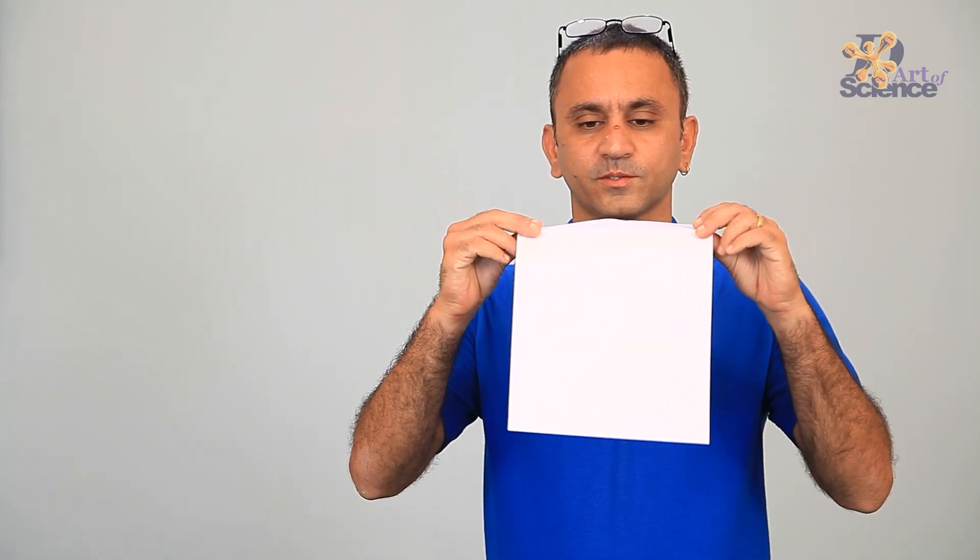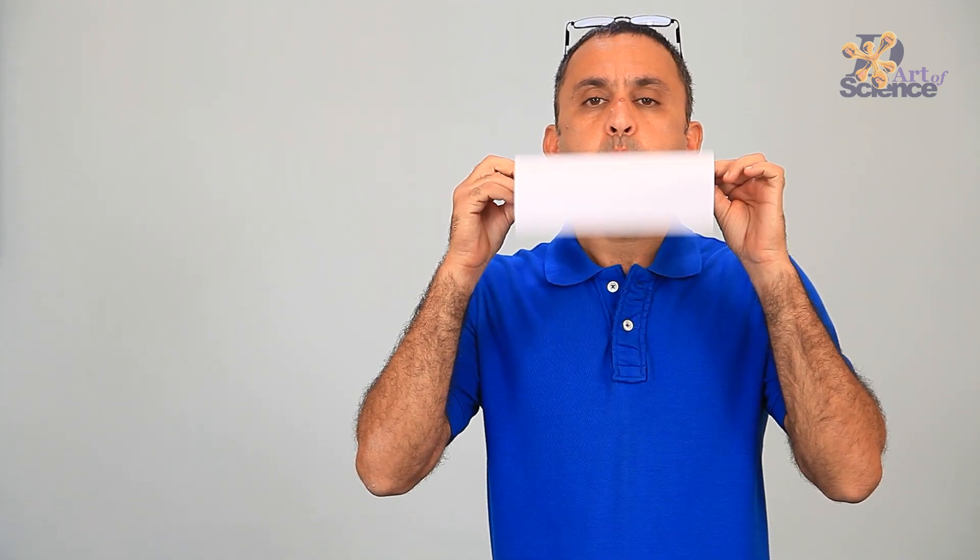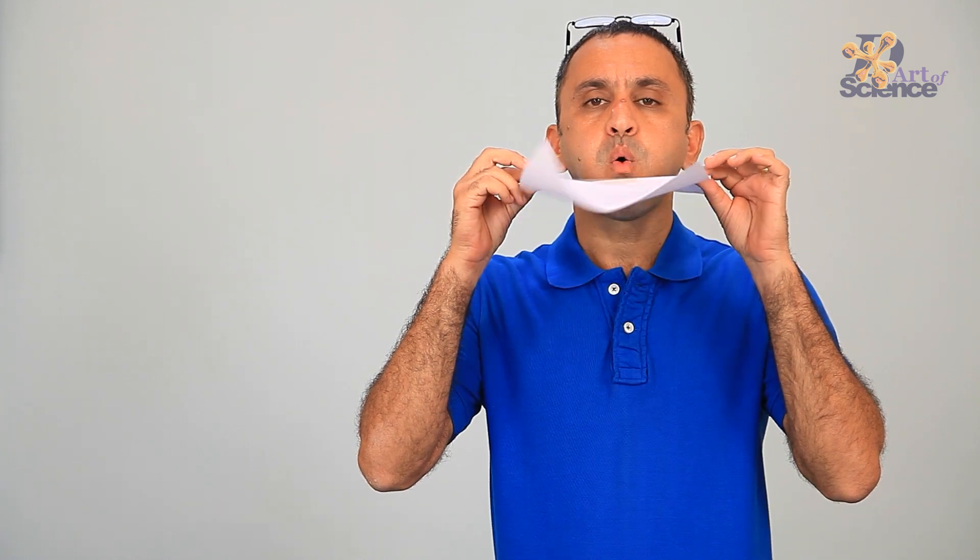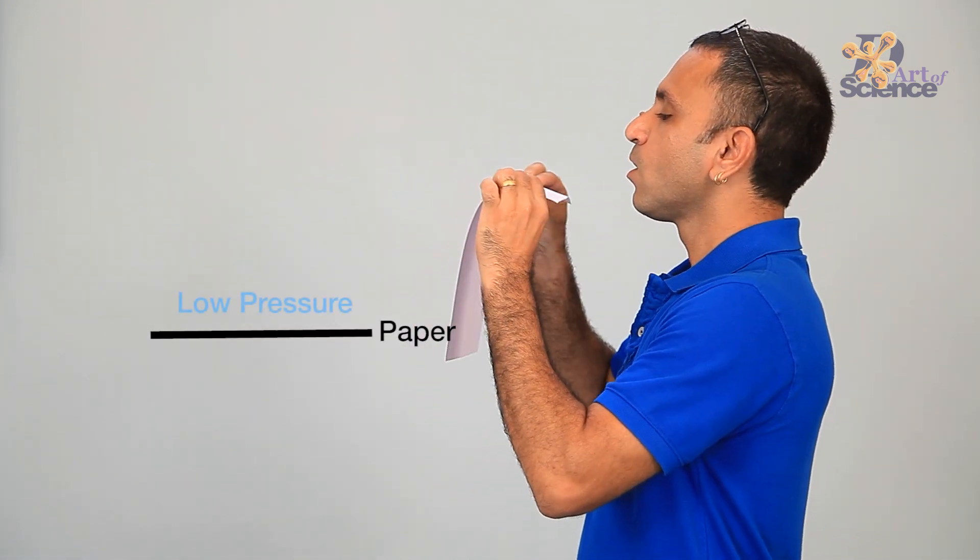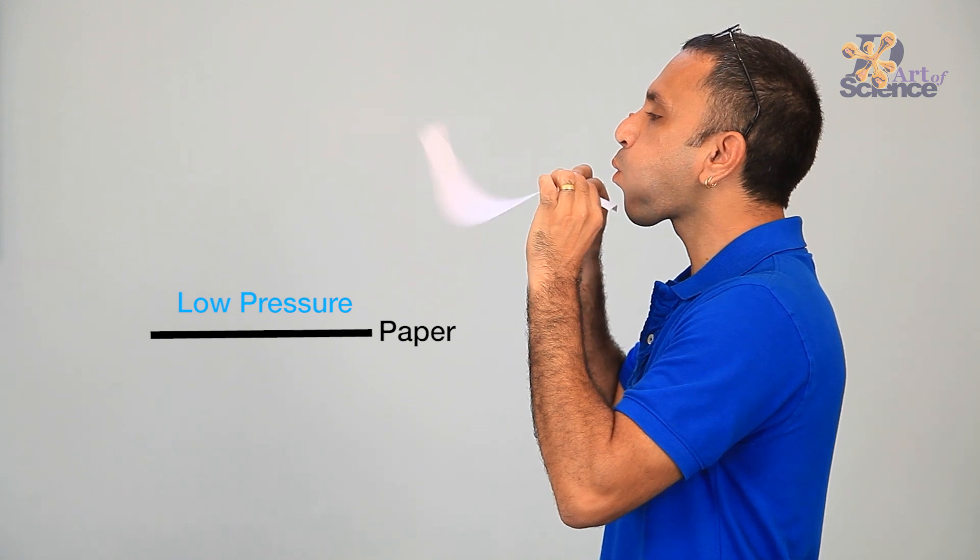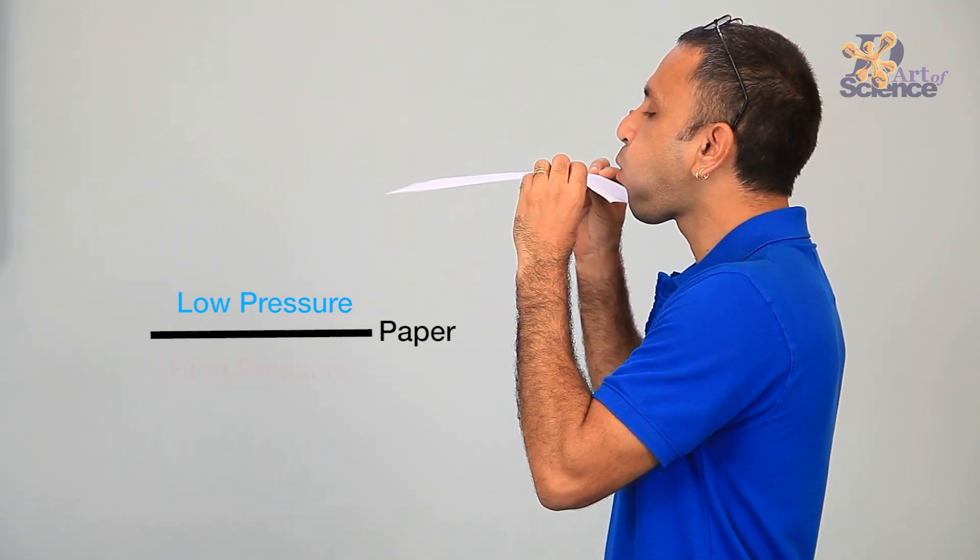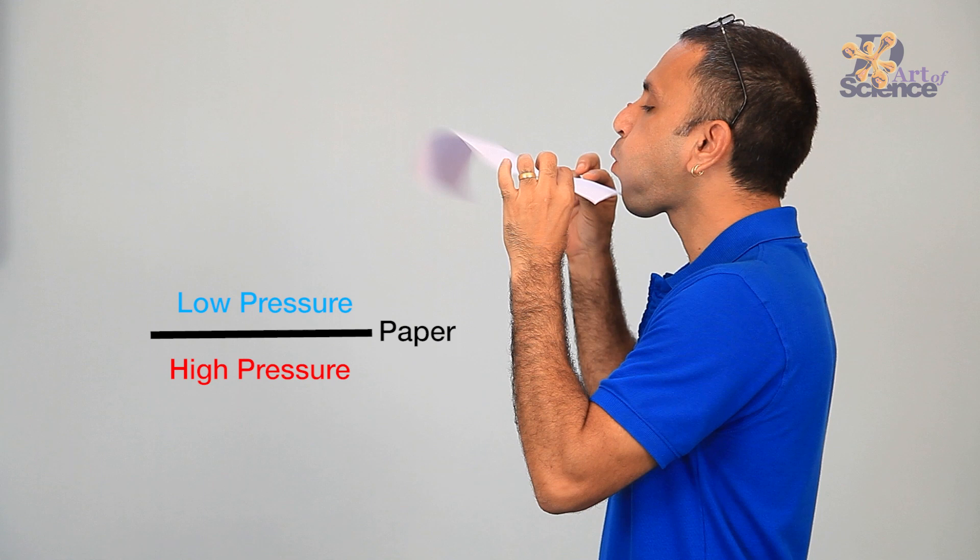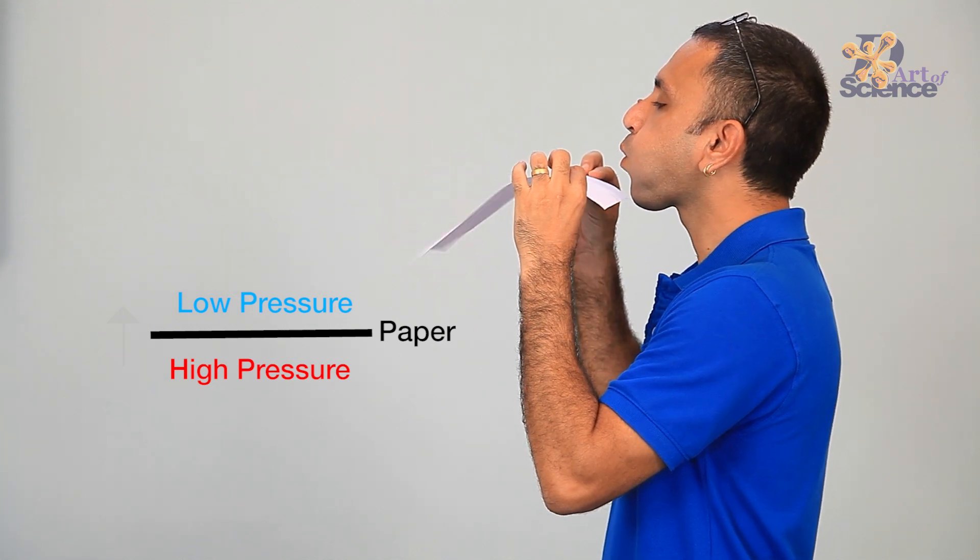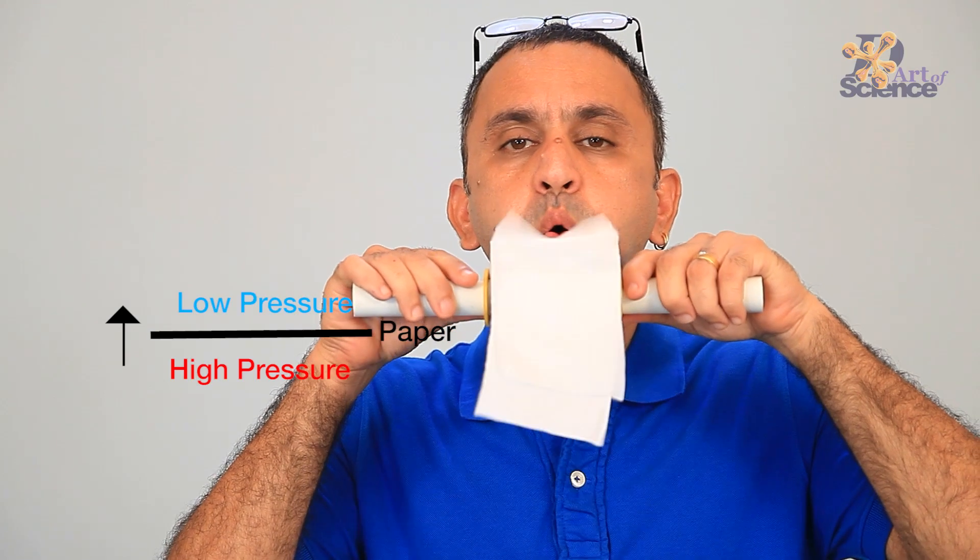If we keep a strip of paper on the chin and blow air from our mouth, we have created a stream of moving air with low pressure. Now, comparatively, the pressure under the paper is higher. And therefore, the higher pressure pushes the paper upwards towards the lower pressure.